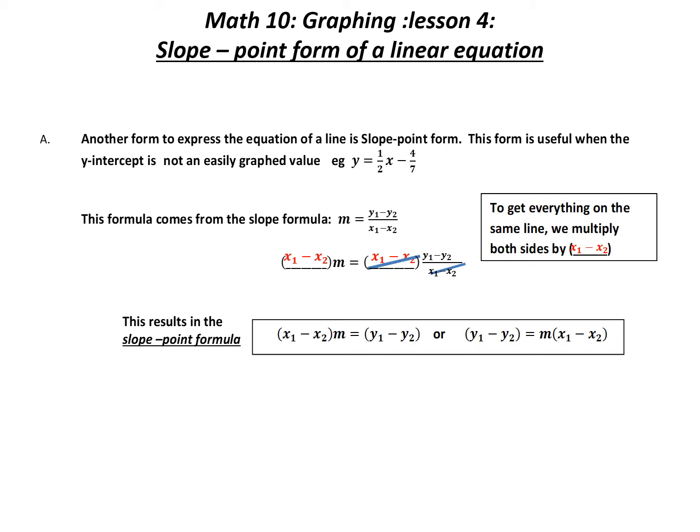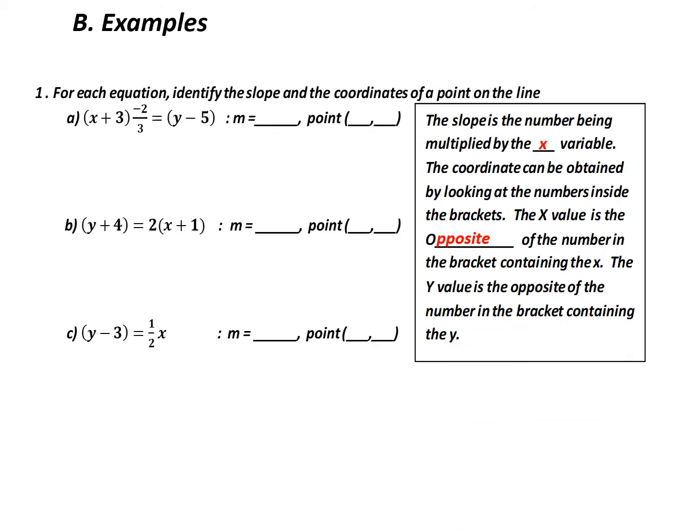We can write it in this form, or we can switch sides and have the x value and the slope on the right-hand side. This is normally the more common method used. In the examples, we are going to look at the equation and identify its slope and the coordinate of a point that is on the line.